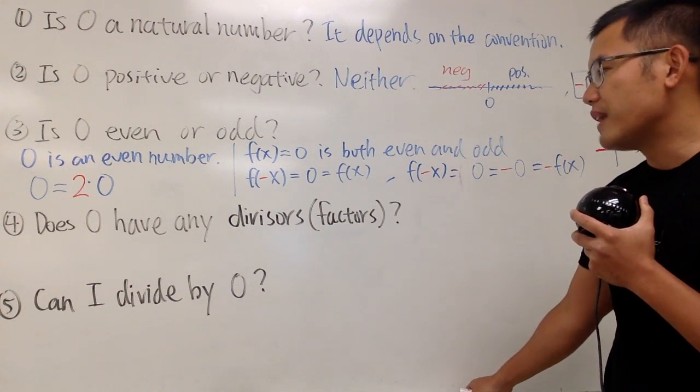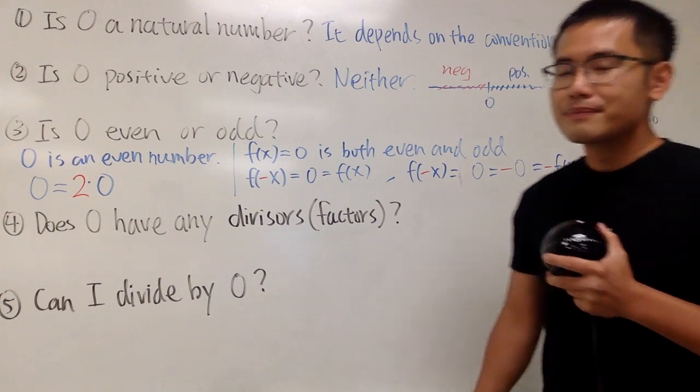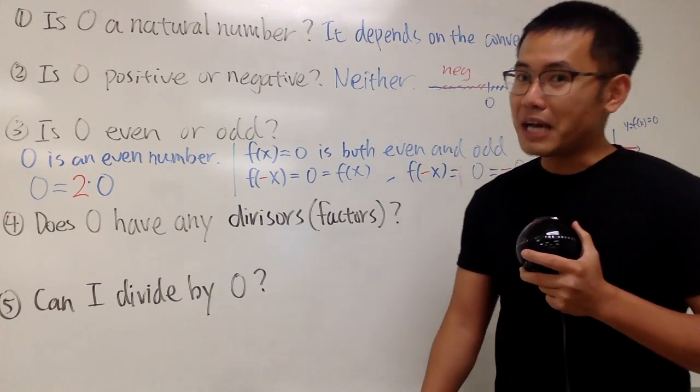Does 0 have any divisors, a.k.a. factors? Yes, a lot of them. Infinitely many of them.